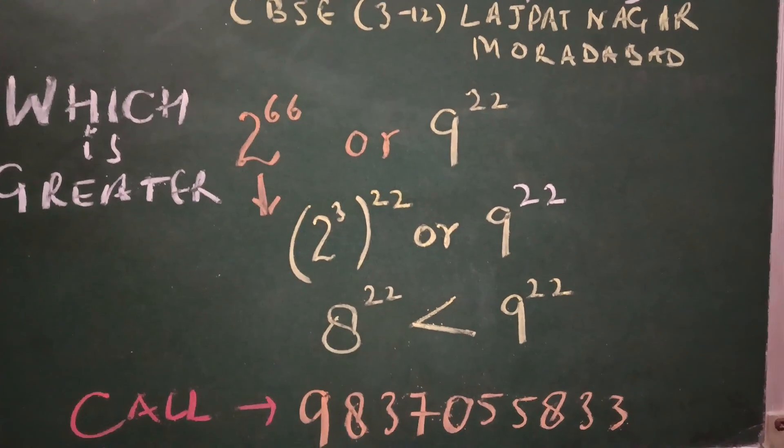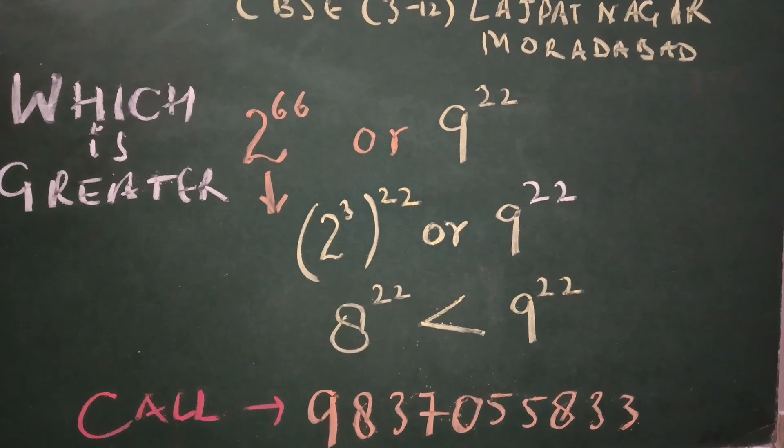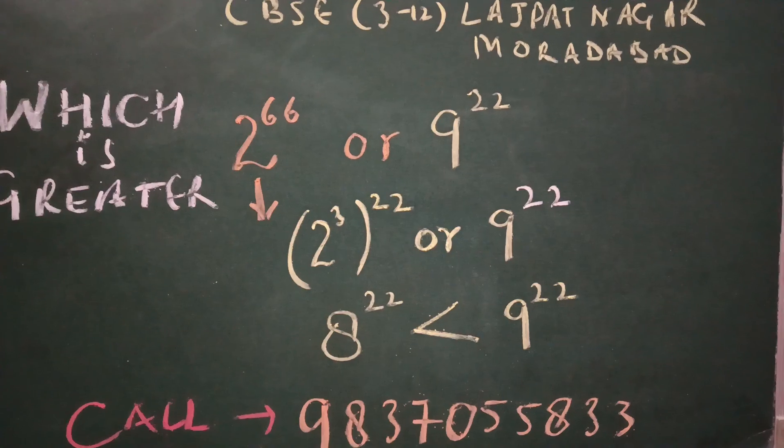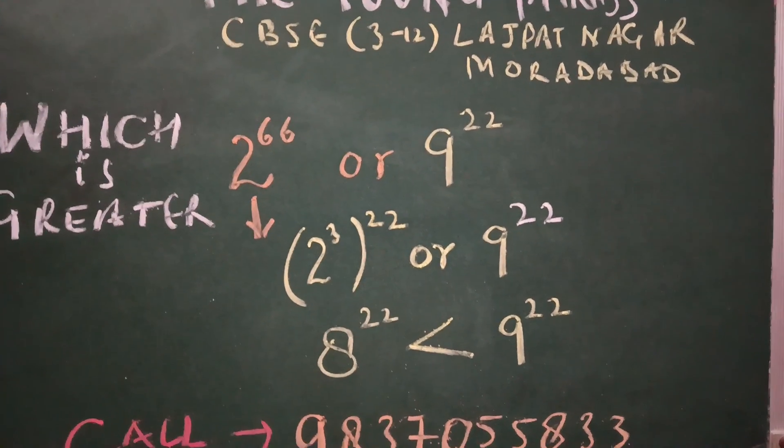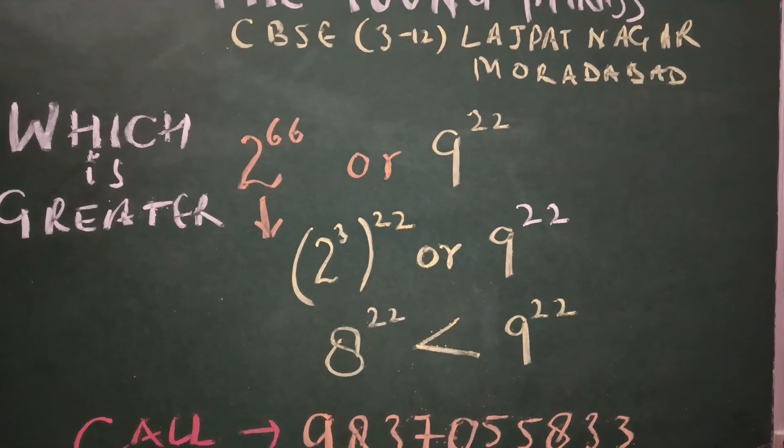So now it becomes very obvious that out of 8 raised to power 22 and 9 raised to power 22, 9 raised to power 22 has a higher value.